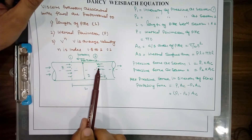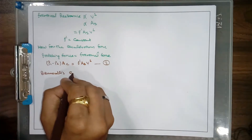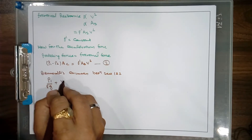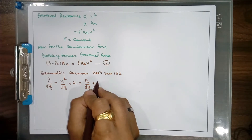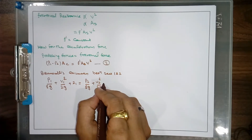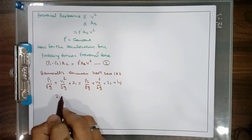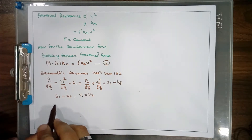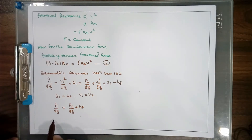Now we apply Bernoulli's equation between the two sections of the pipe. By Bernoulli's theorem: P1/(ρg) + V1²/(2g) + z1 = P2/(ρg) + V2²/(2g) + z2 + hf, where hf is the frictional head loss. For a horizontal pipe, z1 = z2, and since the pipe diameter is constant, V1 = V2. So Bernoulli's equation becomes P1/(ρg) = P2/(ρg) + hf.